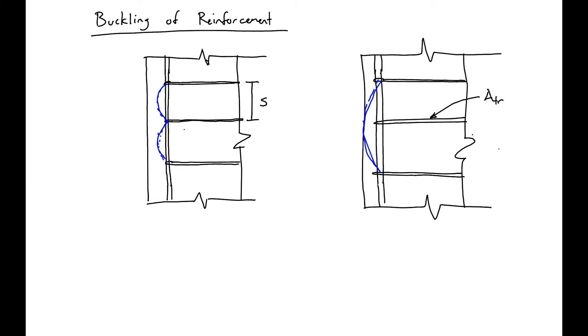If we want to force a higher mode of buckling, as shown on the left, what we'll need is a small enough spacing and also a large enough bar. And this large tie is going to give us sufficient stiffness.